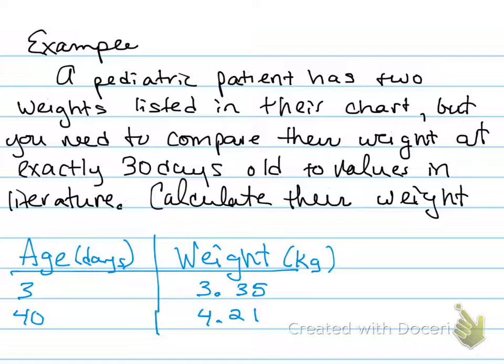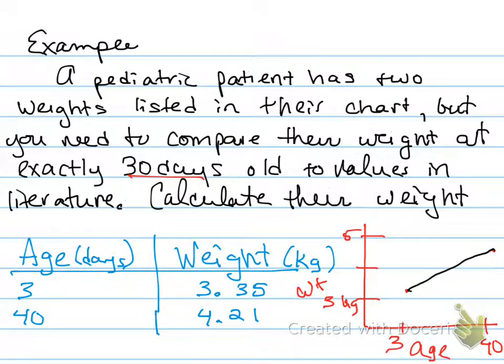So here's an example. You have a pediatric patient with two different weights, one at three days and one at 40 days, and you need to know their exact weight that they had at 30 days old. So we could draw a graph of this relationship. If you imagine age in days on the X axis and the weight on the Y axis. Since we have two data points, it has to be a line. It's an iPad, so you can't do a ruler on it, but you get the idea.